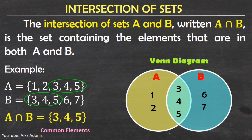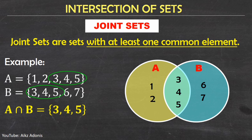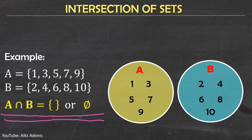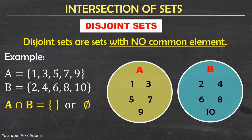This first example also shows joint sets — sets with at least one common element. How about the second example of sets A and B? Since there is no common element in sets A and B, the intersection of set A and B is an empty set or null set. We can show this using a Venn diagram where the two circles do not overlap. This is an example of disjoint sets.